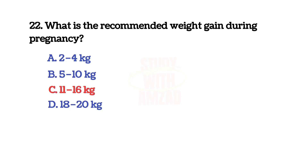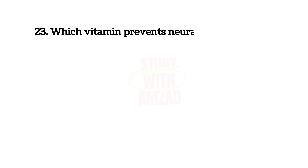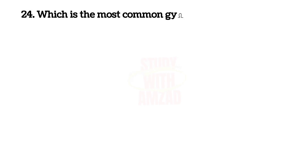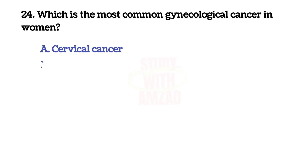Which vitamin prevents neural tube defects? The correct answer is D: Folic acid.